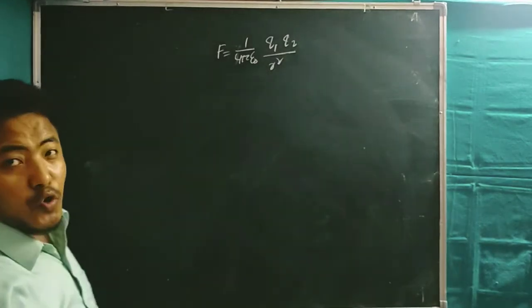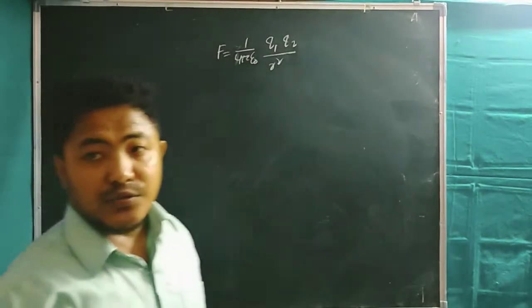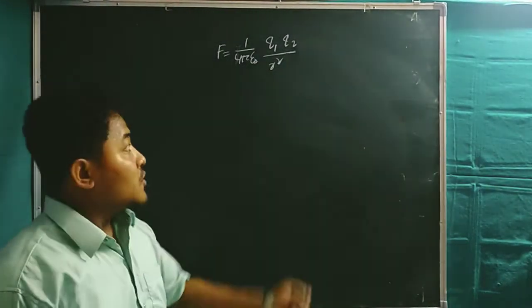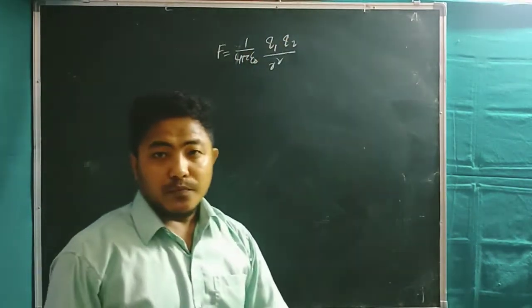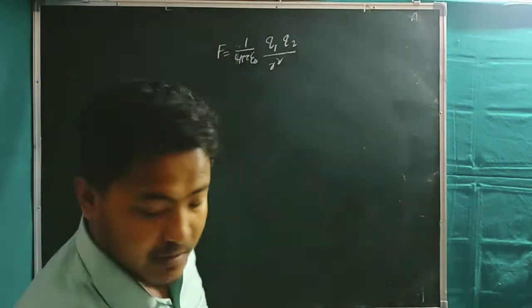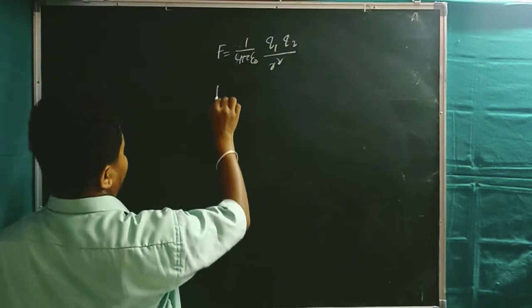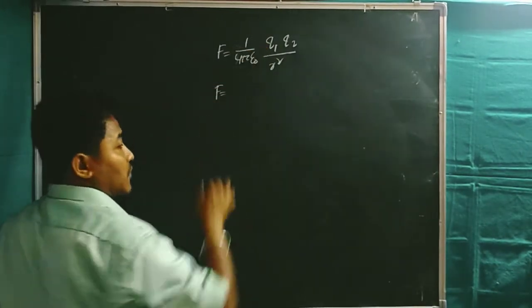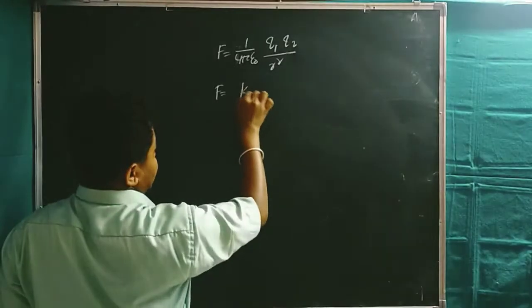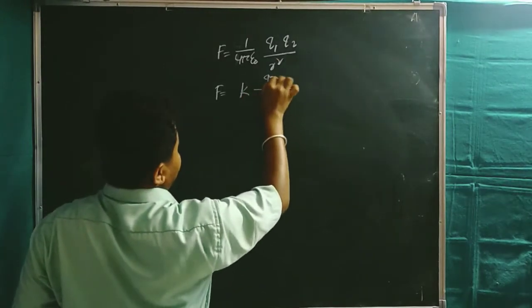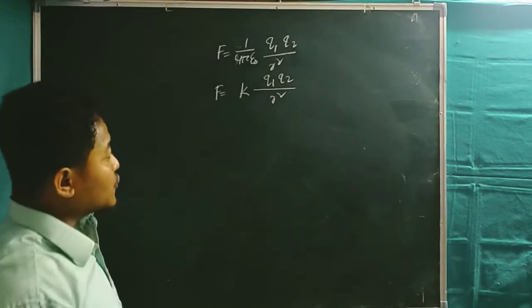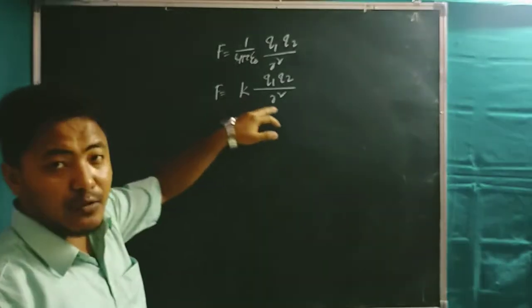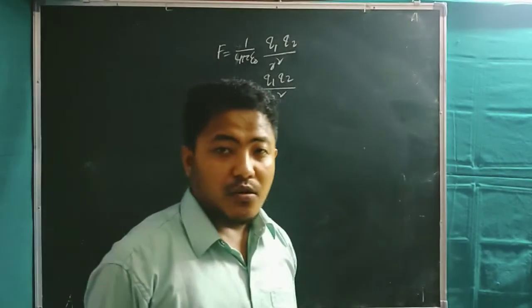This was Coulomb's law as found in the previous class: F = (1 / 4πε₀) · q1·q2 / r², where the factor (1 / 4πε₀) can also be represented as k. So F = k·q1·q2 / r². I told you that k is the electrostatic constant.